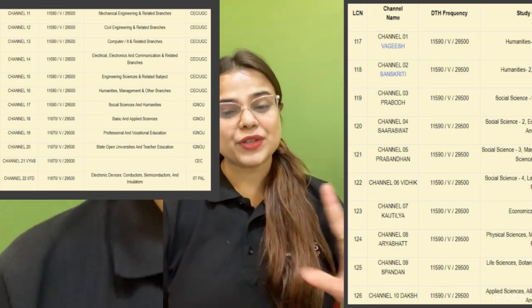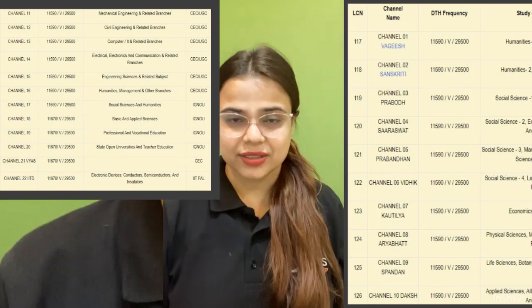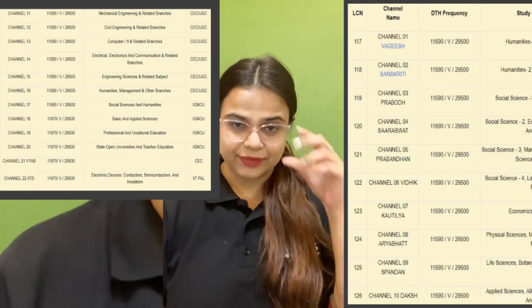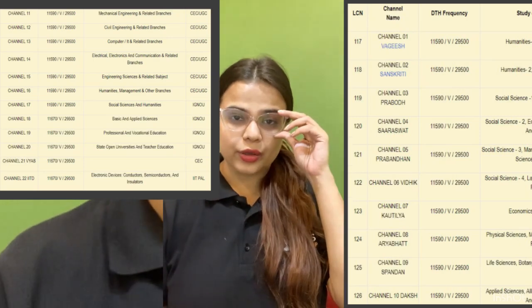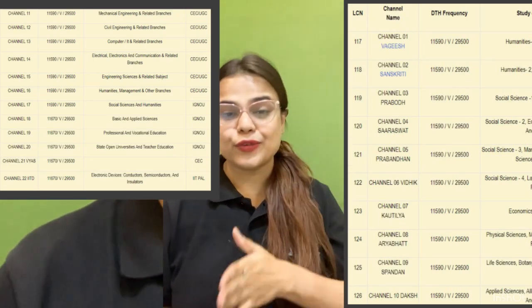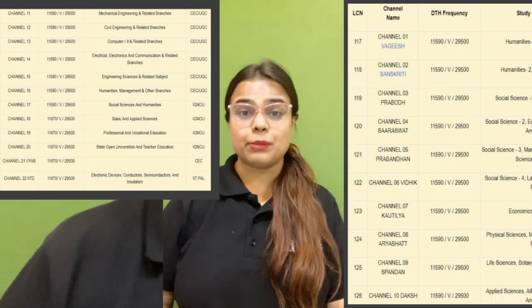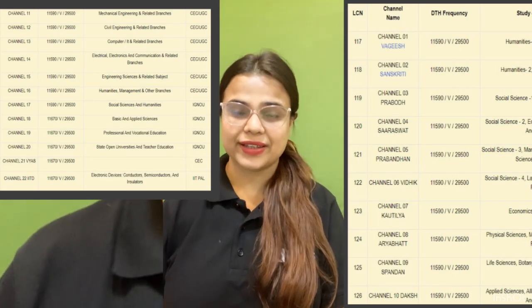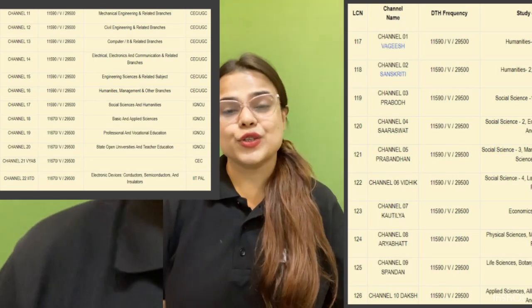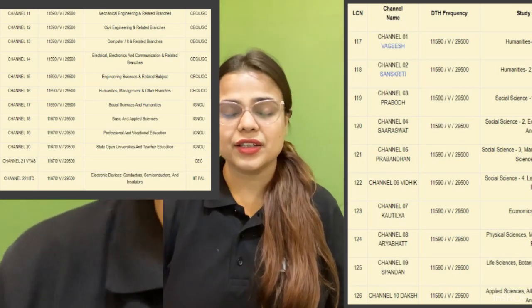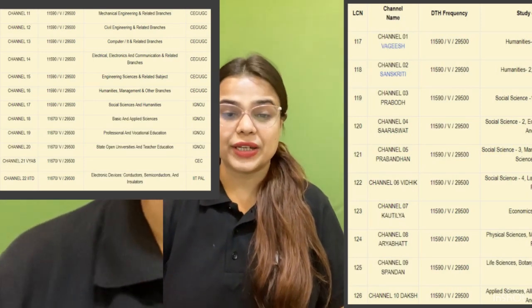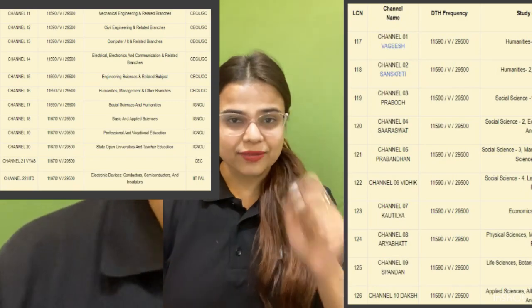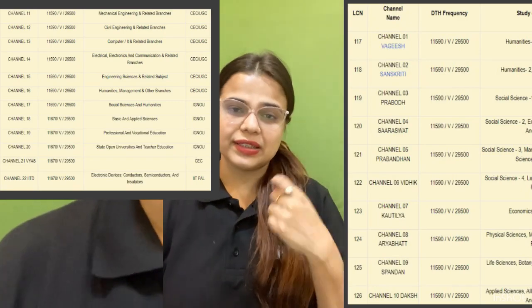Swayam Prabha is a DTH channel. It was launched on 7th of July 2017 and there are 34 direct-to-home channels managed by SAC Gandhinagar. It is the Bhaskar Acharya Institute that is located in Gujarat, and there is 24x7 content released.